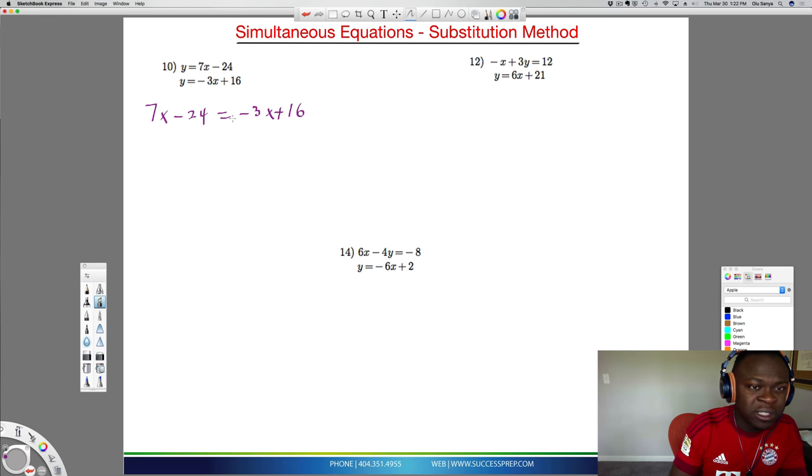If you take a look at this, the reason I can do this is because this left side is equal to y and this left side is also equal to y. So when the same y is equal to two different things, make the two different things equal to each other. That's why we call it substitution method. You substitute equal things into each other.